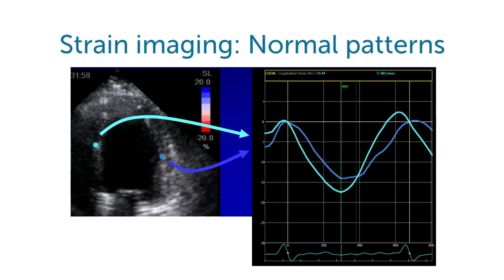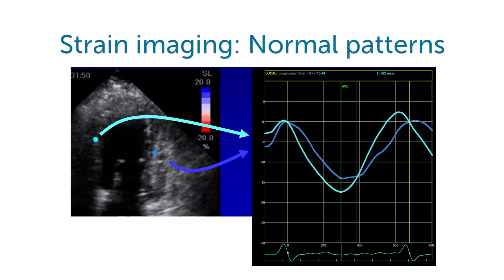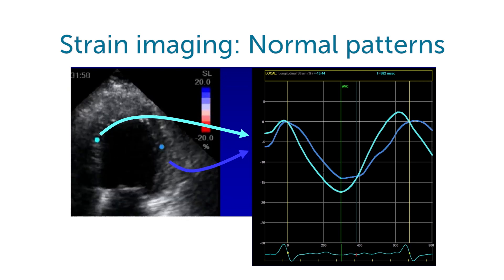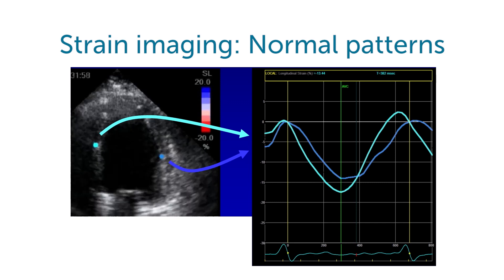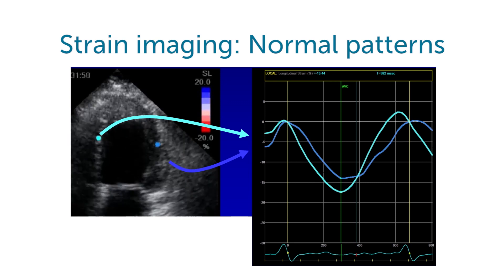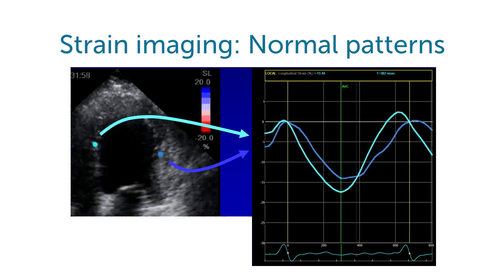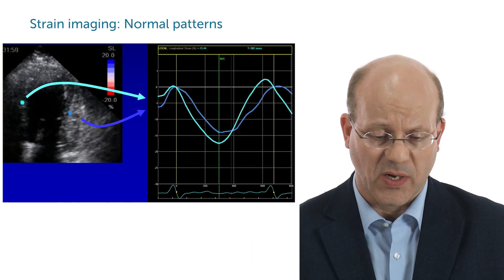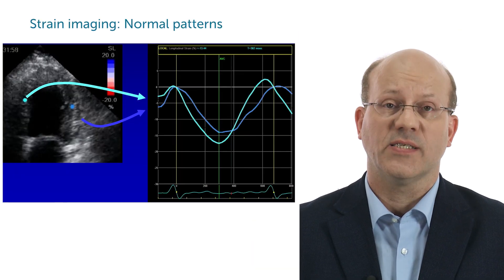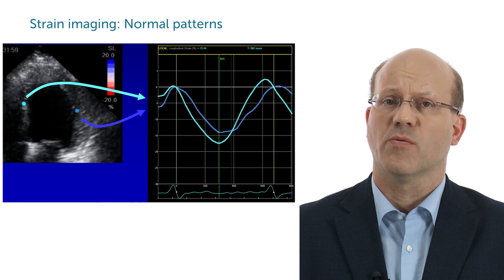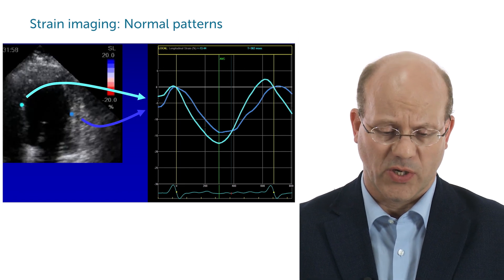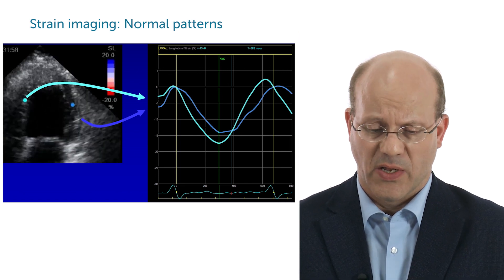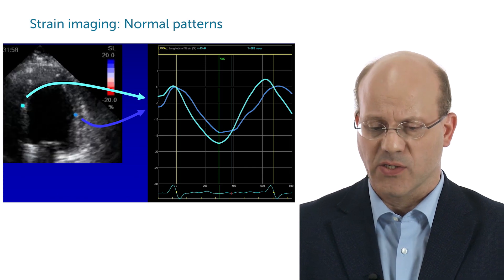So what can we do? We can measure strain and do regional strain assessment. I show you here the analysis as a comparison between a sample volume in the septum and a sample volume in this abnormally moving lateral wall. And when you look at the strain curves, you can clearly see that both curves are completely normal. They show systolic shortening, they are synchronous, and there's nothing abnormal to be detected.